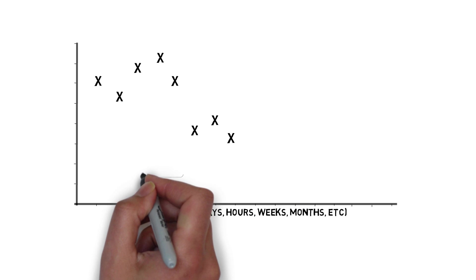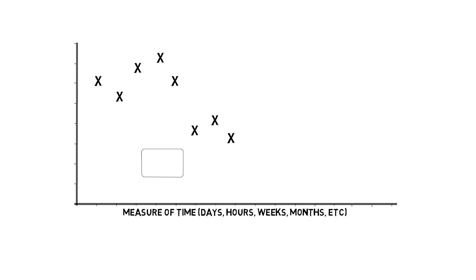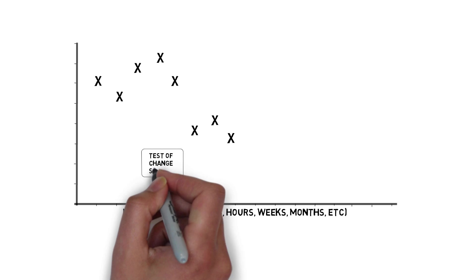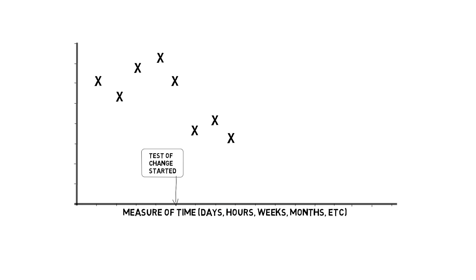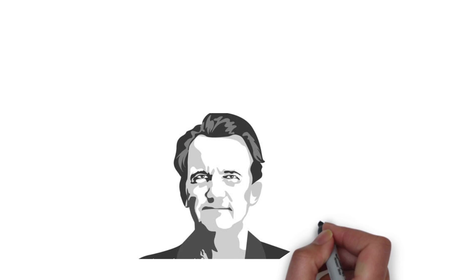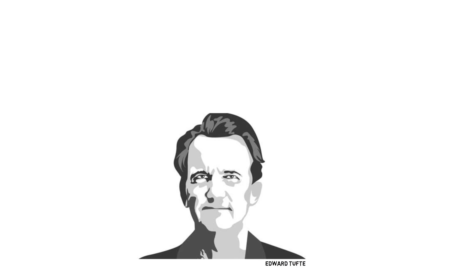Early plotting of the data also allows for annotations to be captured in real-time. For example, when we have started a test of change in our system, notes about this should be included on the run chart to explain any variation in the measure being plotted. In addition to following the seven steps to building a run chart, good design principles for data display should be followed to maximize the chart's visual communication.